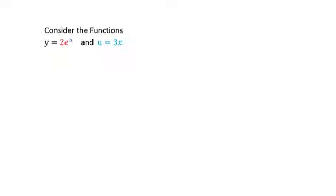We can also look at this from a different angle where two functions are defined: y = 2e^u and u = 3x. If we substitute u into the first function, we get y = 2e^(3x). So we can write y = 2e^(3x) as two separate functions. You need to write y in terms of u and u in terms of x before applying the chain rule.